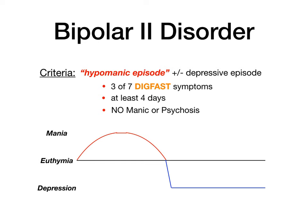On the mood graph, bipolar 1 showed manic episodes flipping into depressive episodes. Since hypomania is a little less than mania, just bump that red part of the graph down a little and you get bipolar 2. The patient alternates between hypomanic episodes and major depressive episodes — three of seven DIG-FAST symptoms for at least four days in the hypomanic part, and at least five SIG-E-CAPS symptoms for at least two weeks for the major depressive part.